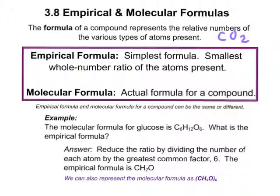An empirical formula versus a molecular formula — those are important to understand the difference between them. An empirical formula is the simplest formula; it's the very smallest whole number ratio of the atoms present. A molecular formula, in contrast, is the actual formula for a compound.